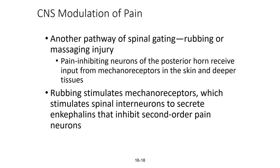Another pathway of spinal gating occurs when we rub or massage an injury — something we do almost instinctively. Pain-inhibiting neurons of the posterior horn receive input from mechanoreceptors in the skin and deeper tissues. Rubbing the site of injury stimulates those mechanoreceptors, which then stimulate spinal interneurons to secrete enkephalins that inhibit second order pain neurons. That covers two different routes of CNS modulation of pain, concluding chapter 16 part one. The next topic will be the special senses. Please let me know if you have any questions.